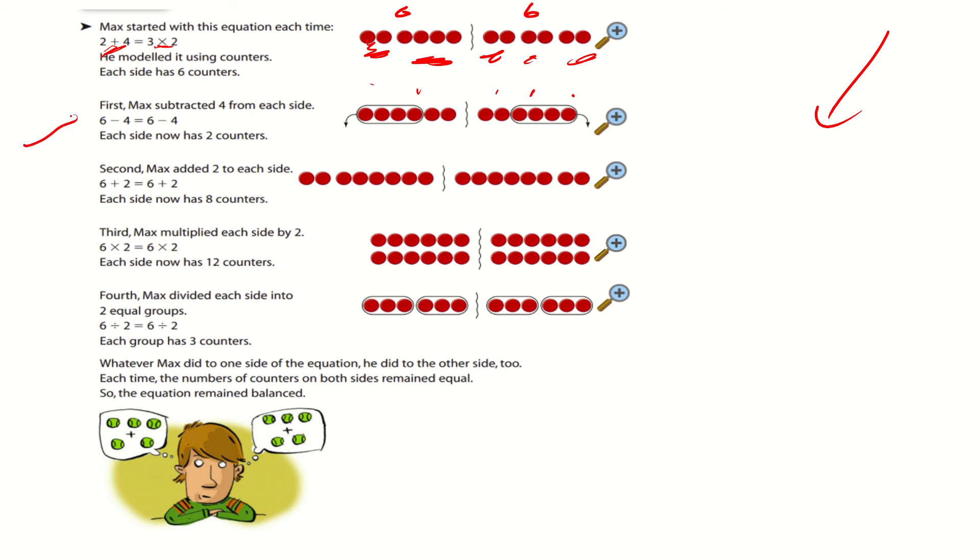So, to preserve the equality, Max subtracted 4 from each side. So he did 6 minus 4, and he got rid of them, and he did 6 minus 4 and got rid of them to make them equal, so they each have 2. So here, if I was to preserve the equality, 2 plus 4 minus 4, and 3 times 2 minus 4. These are the exact same equations, even though they look a lot different. That's what preservation of equality is.